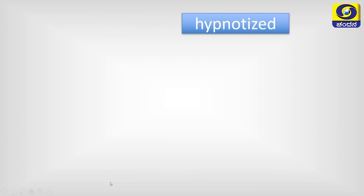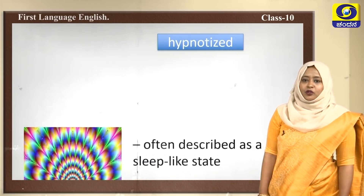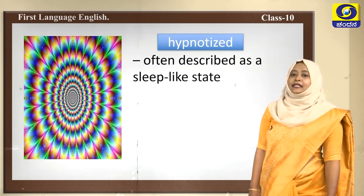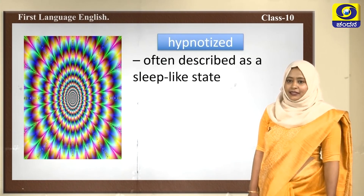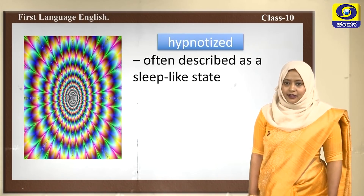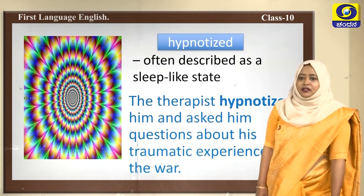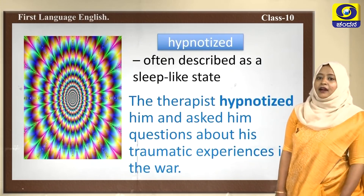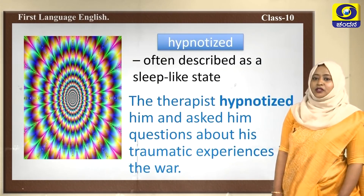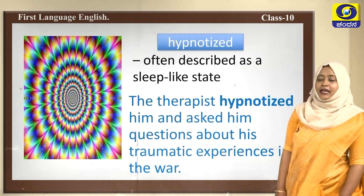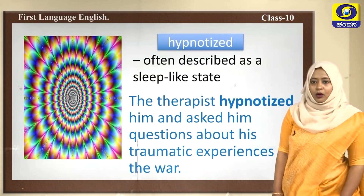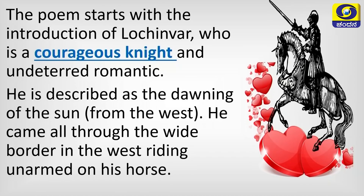The next word is stature — the height of a person or reputation gained by ability or achievement. Example: This was a race distinguished by lofty stature. Stature has two meanings: one is height, and another is position in society. The next word is hypnotized — often described as a sleep-like state. Example: The therapist hypnotized him and asked him questions about his traumatic experience in the war.